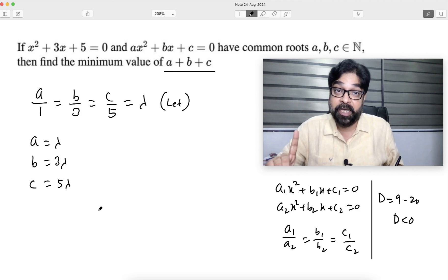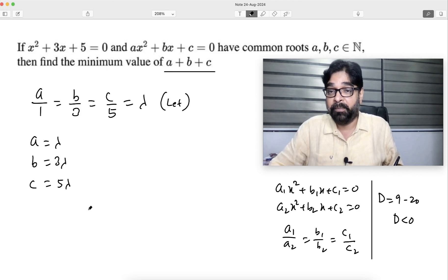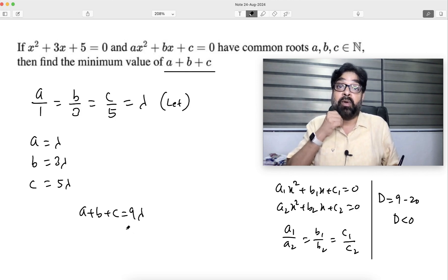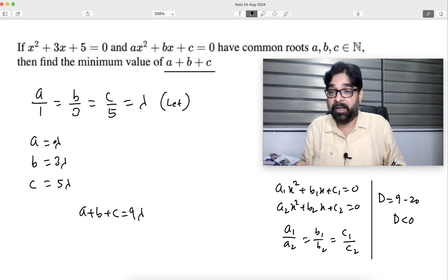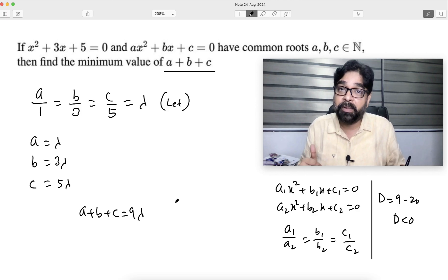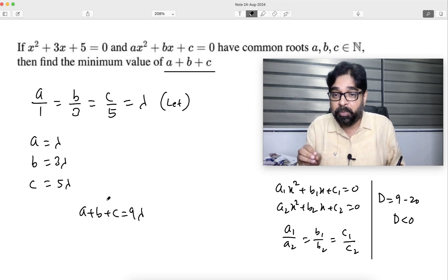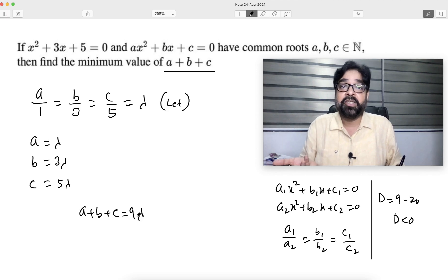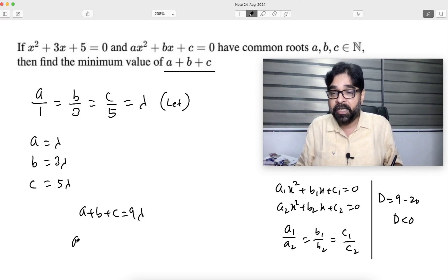Be clear: a, b, c are natural numbers, so a + b + c will be equal to 9 lambda. And lambda is natural—why lambda natural? Because lambda is a, and a is a natural number. So this will be least only when lambda will be least. What is the least natural number? 1. So it means a + b + c minimum value will be equal to 9.